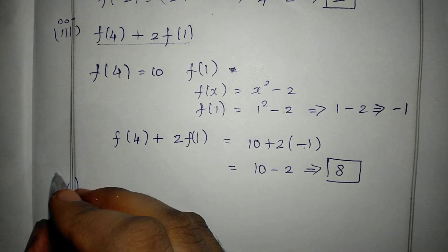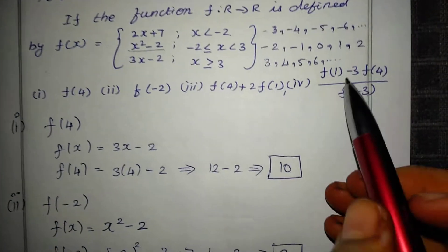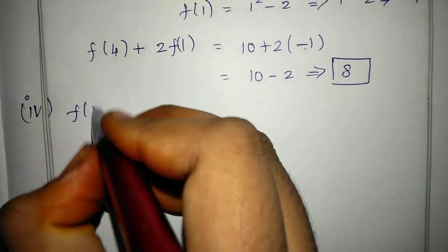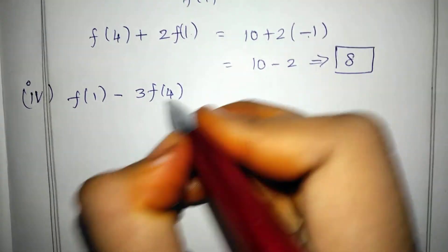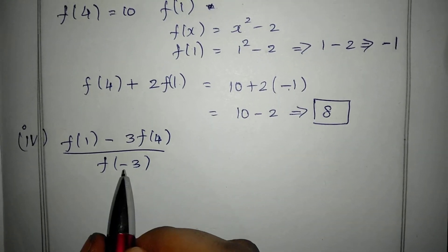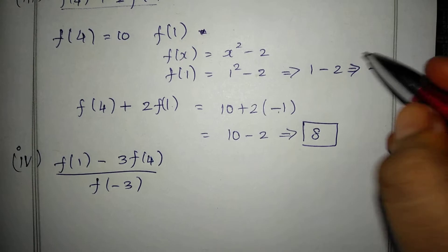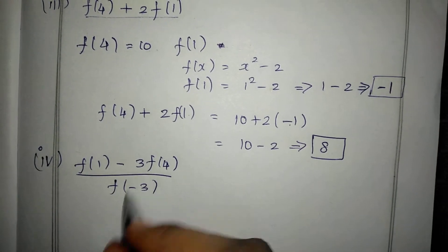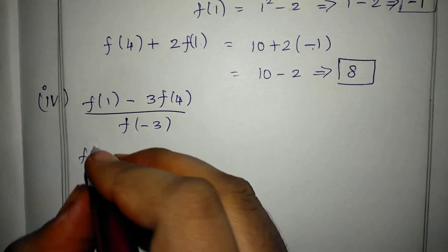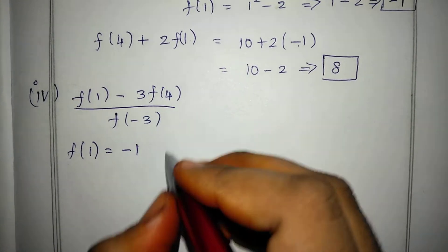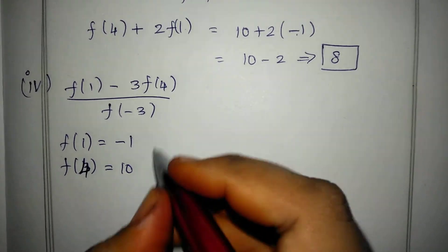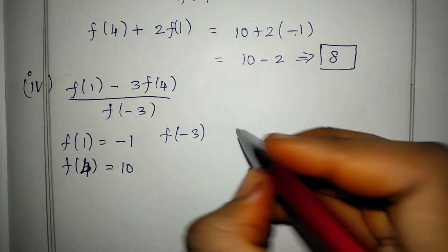Second and third subdivisions done. Now fourth subdivision: f(1) times f(4) and f(3), then f(1) minus 3 into f(4) divided by f(minus 3). f(1) is minus 1, f(4) is 10, and f(minus 3) — since minus 3 is less than minus 2 — uses f(x) = 2x plus 7.